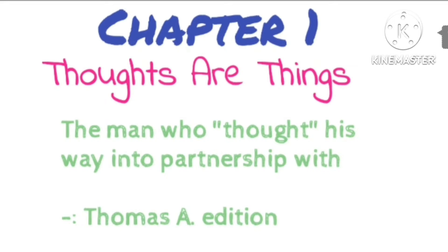He staked a claim and went to work with pick and shovel. The going was hard, but his lust for gold was definite. After weeks of labor, he was rewarded by the discovery of shining ore. He needed machinery to bring the ore to the surface. Quietly he covered up the mine, retraced his footsteps to his home in Williamsburg, Maryland. He told his relatives and a few neighbors of the strike. They got together money for the needed machinery, had it shipped, and the uncle and Darby went back to work the mine.